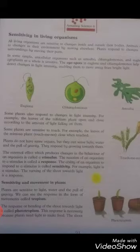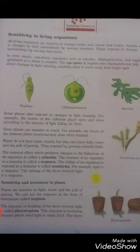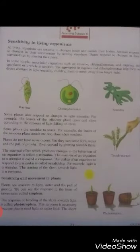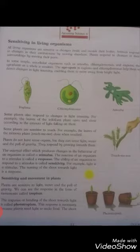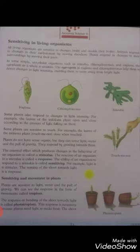Unicellular organisms such as amoeba, chlamydomonas, and euglena — the cytoplasm as a whole is sensitive. Yeh tamam puray hi sensitive hootet hain. The eye spots in euglena and chlamydomonas help them to detect changes in light intensity, enabling them to move away from bright light. Yeh zyadha tiaze rooshni meh move nahi ker sekte — iskabin nahi hootethe.